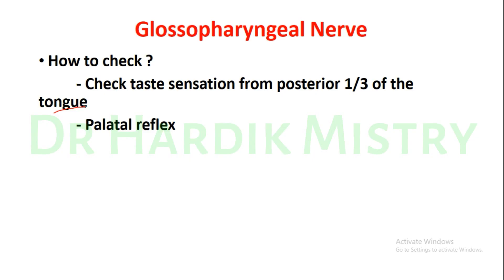You have to check taste sensation from the posterior one-third of the tongue for all four types: salt, sweet, sour, and bitter. All four types of taste must be checked from the posterior one-third of the tongue. The second test is the palatal reflex.